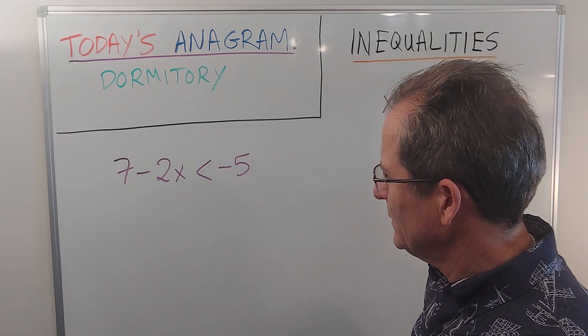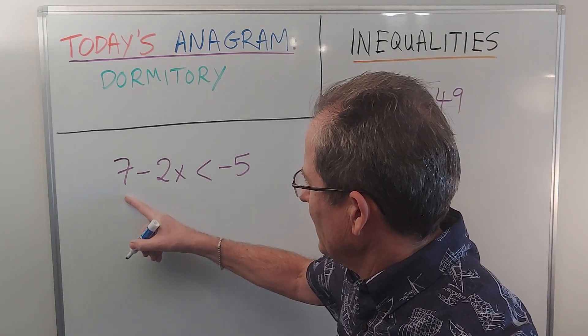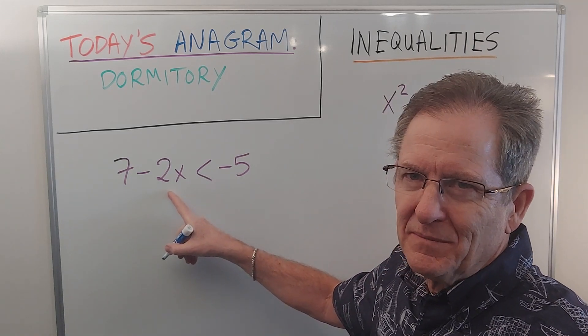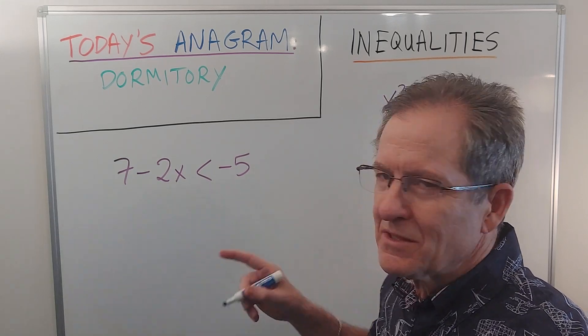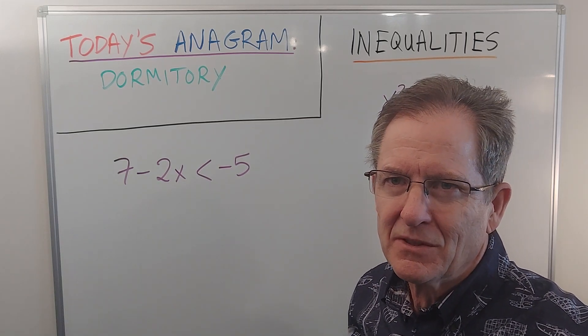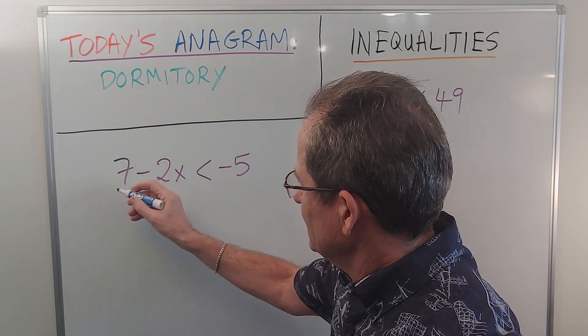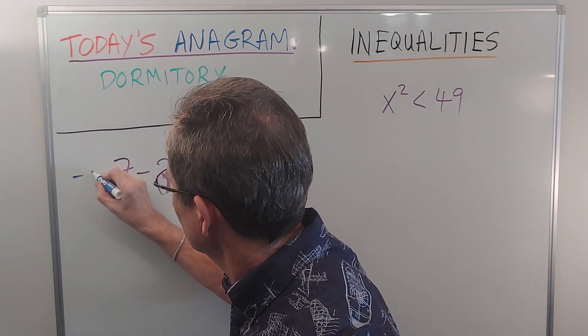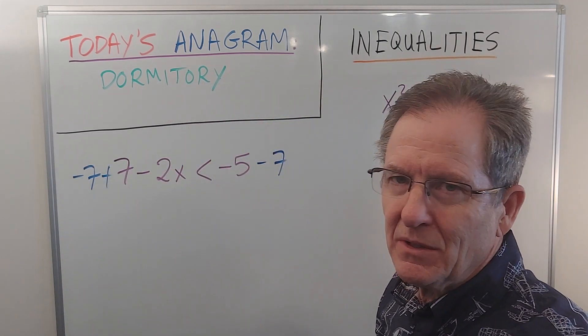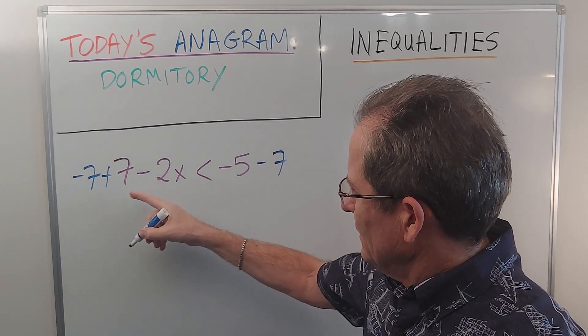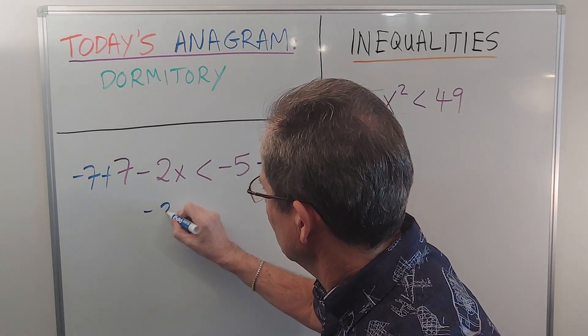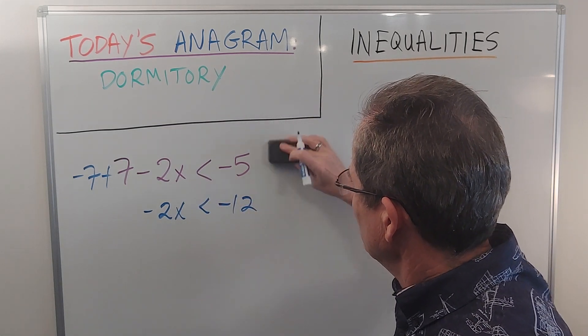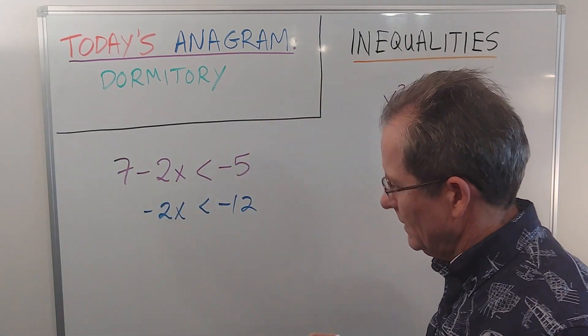If you show all the gory details, the first thing to do is subtract 7 from both sides. You could divide both sides by negative 2, but then you're going to get fractions here and here, plus there's another problem that's going to come up as you'll see in a minute. So I wouldn't do that. I would subtract 7 from both sides. Some people will actually write that in, I'll do it in a different color, but there's no need to do that. If you bring the 7 over here it becomes negative, so you get negative 2x is less than negative 12. I would just do that in my head, so let me erase that.